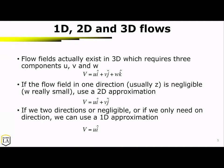This velocity vector can actually exist in one dimension, two dimensions, or three dimensions. In a 3D example, we have our X, Y, and Z axes. At a given point, the particle has some velocity, and that velocity has three components: in the X direction, the Y direction, and the Z direction. The unit vectors are: X corresponds to i-hat, Y to j-hat, and Z to k-hat.